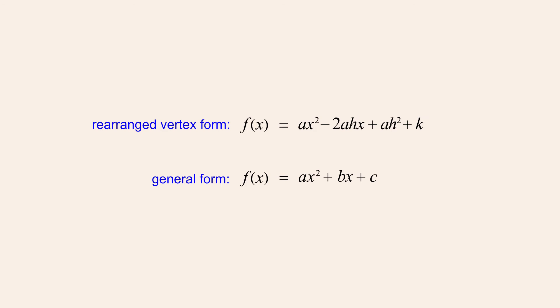Since these two equations are just different descriptions of the same quadratic function, we can equate the coefficients of x in both equations and equate the constant terms in both equations. This gives us formulas that allow us to calculate the values for b and c in the general form, given the values of a, h, and k in the vertex form.